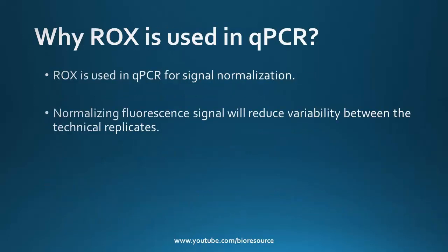The main reason for using ROX in qPCR is signal normalization. By normalizing the fluorescent signal, variability between technical replicates can be reduced. Slight variations between wells can affect the fluorescent signal generated in qPCR — for example, differences in reaction volume due to pipetting error can cause bias in the results, and issues associated with qPCR instrument optics can also influence the fluorescent signal. A passive reference dye like ROX helps normalize for these factors.